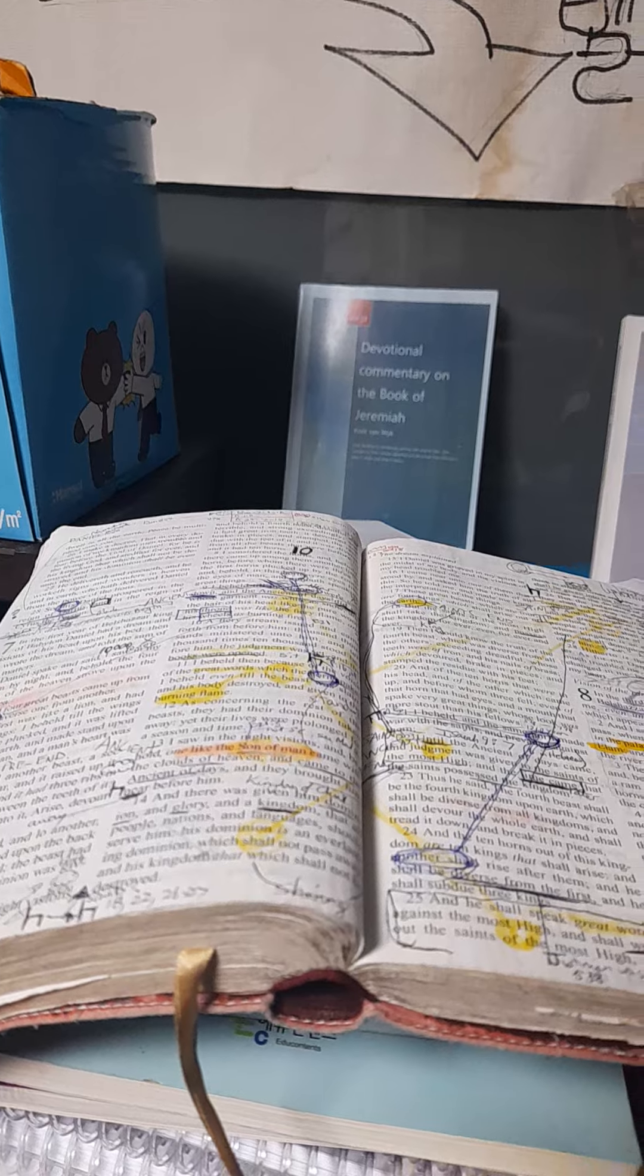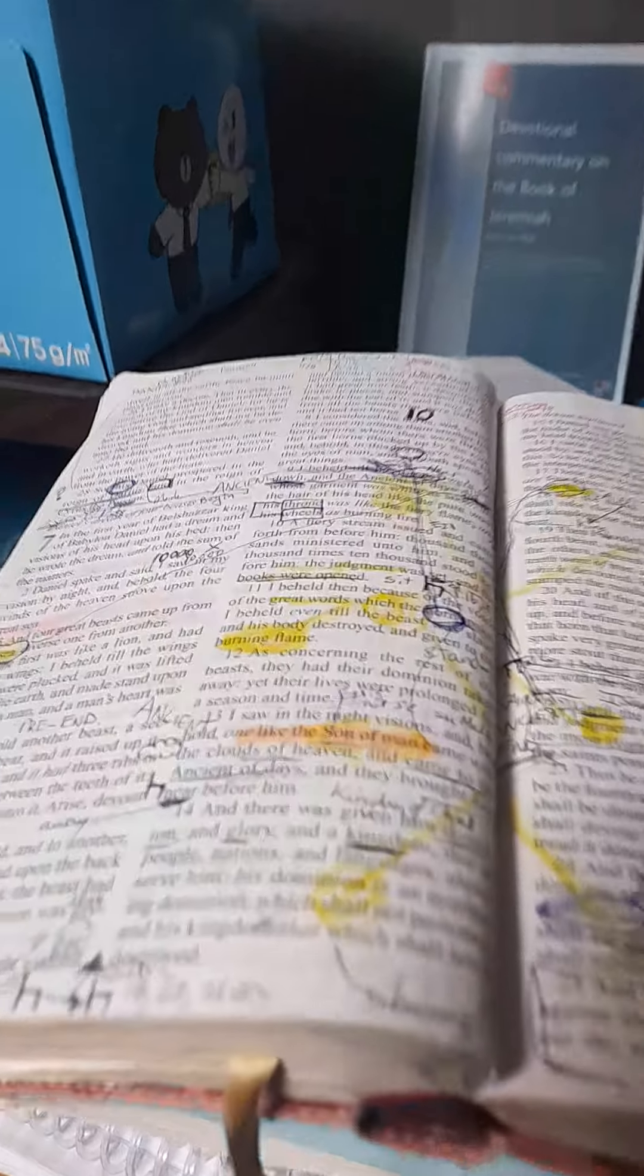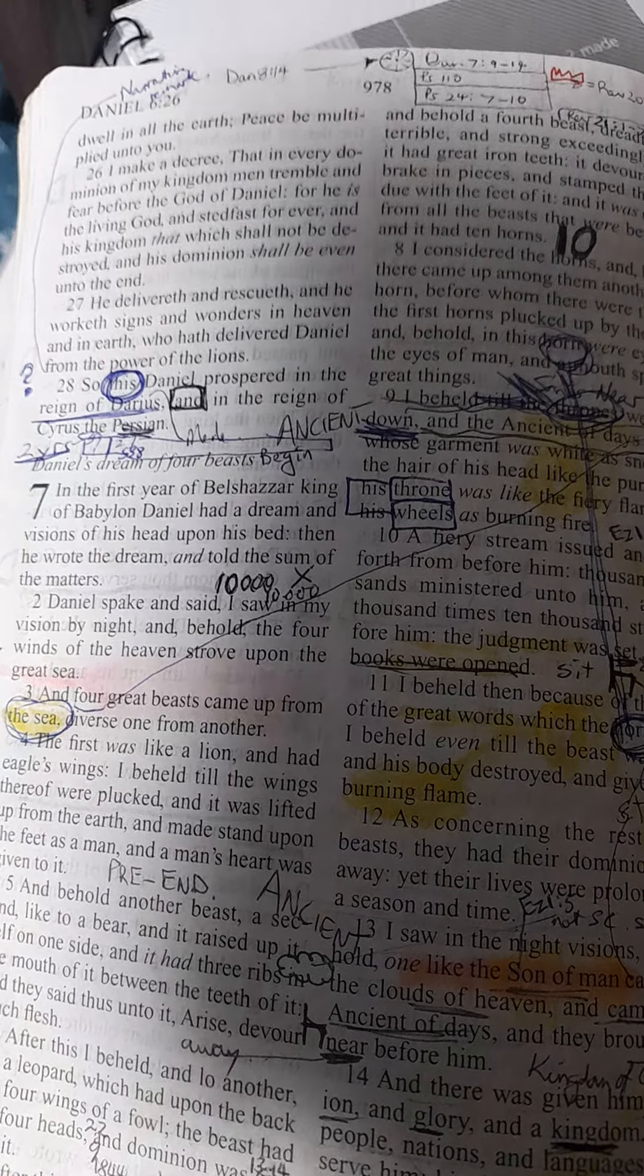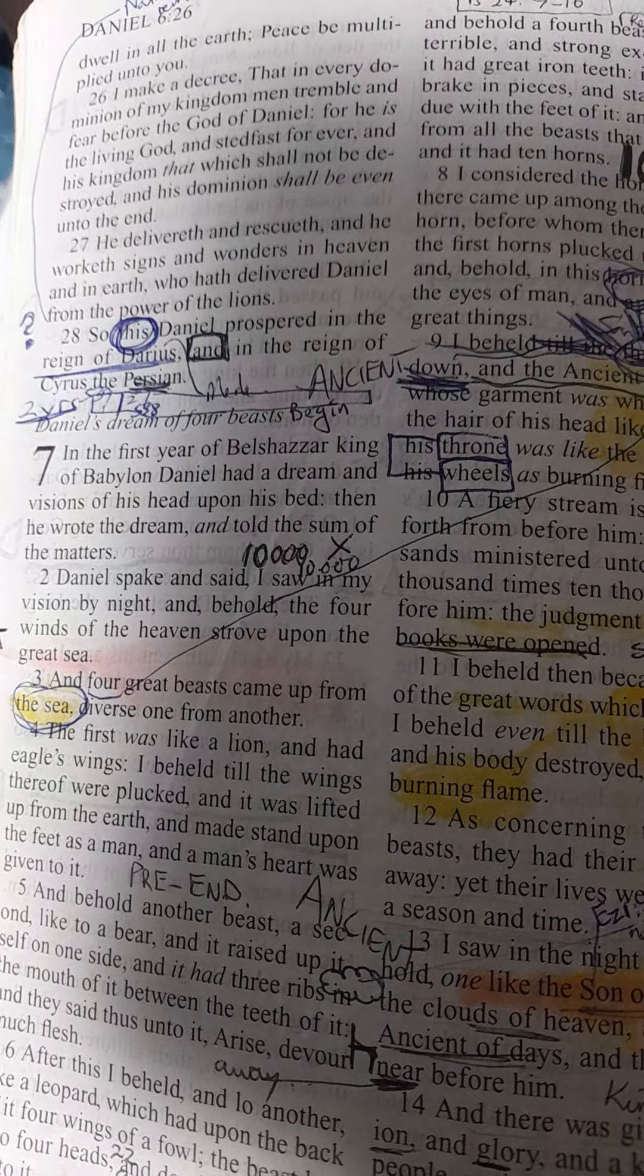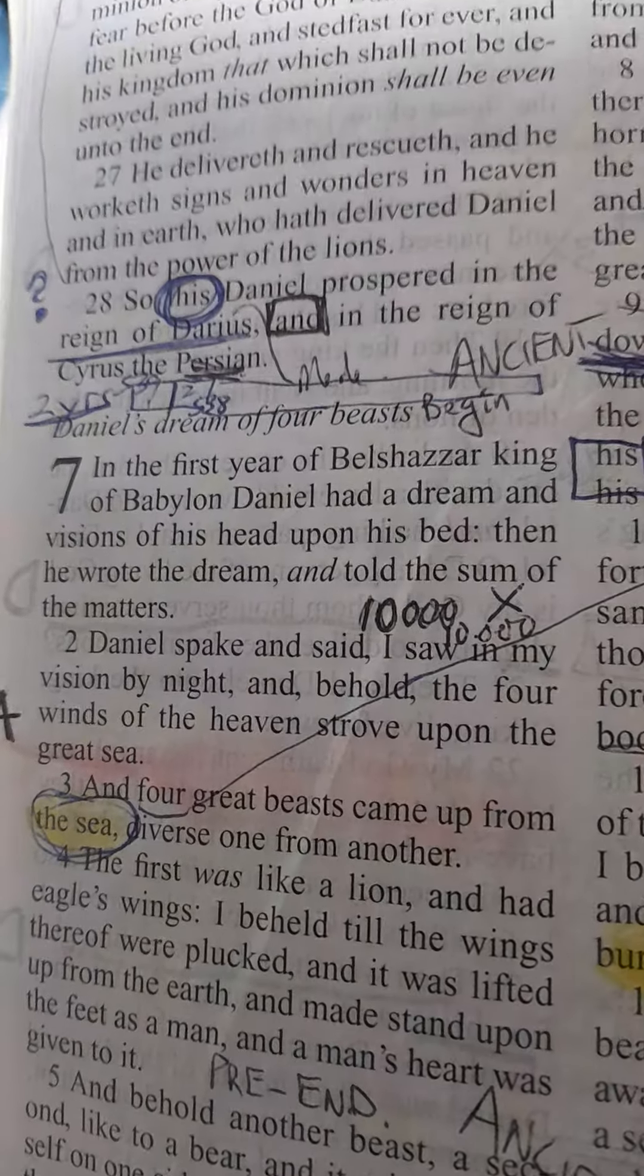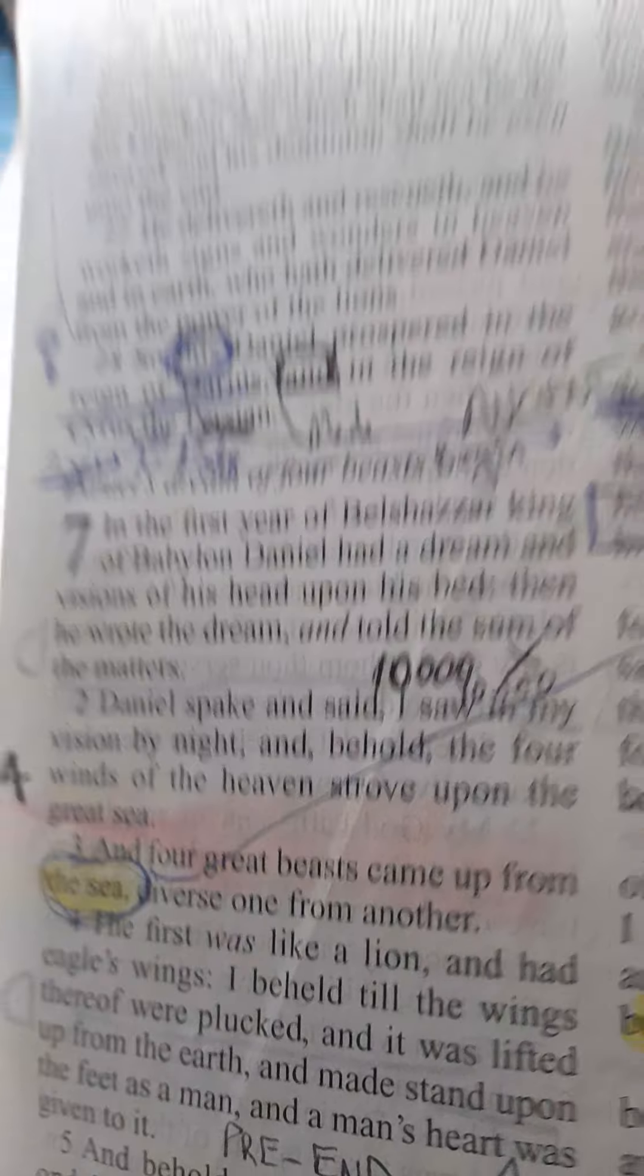I want to share with you chapter 7. As background to chapter 7, you need to have an overview of the book of Daniel. This is my King James version of Daniel, Daniel 7, and you can see there, in the first year of Belshazzar, king of Babylon, Daniel had a dream and visions on his head upon his bed. We will do more about that.